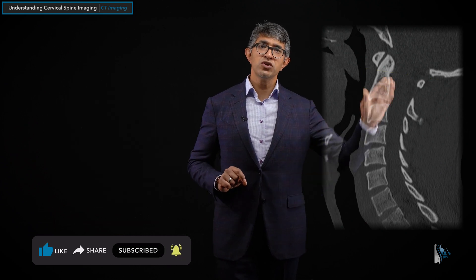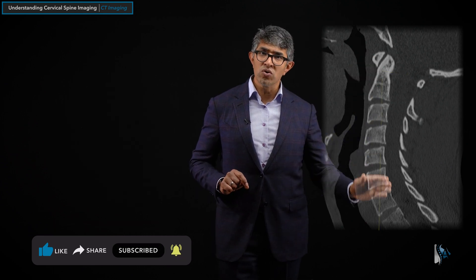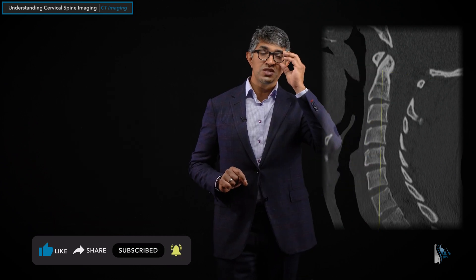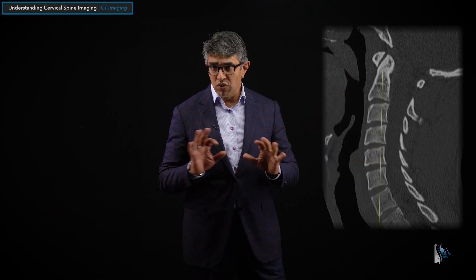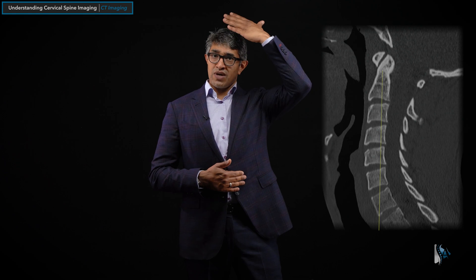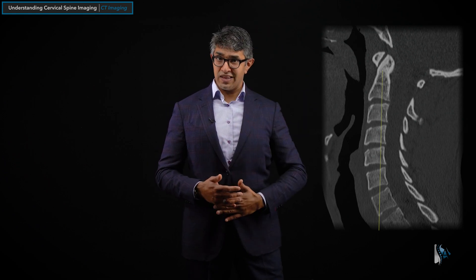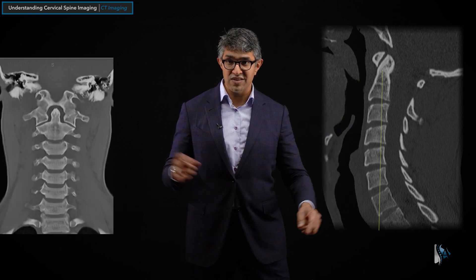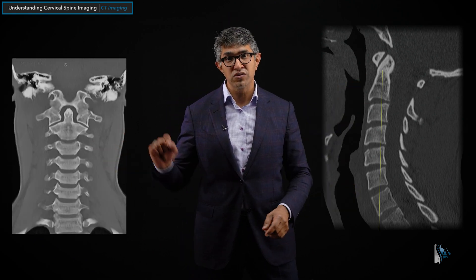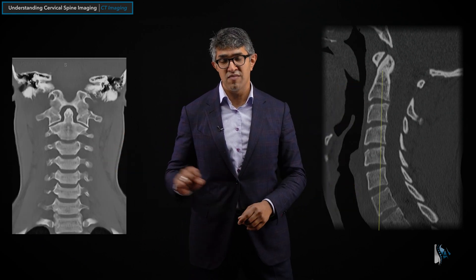Similarly, you can take a coronal slice through a CT scan, and these are almost always available — they're not always available for an MRI. Coronal sequences most of the time are available for a CT scan. This is a slice kind of like this through the front, and it gives you a picture that looks like this.